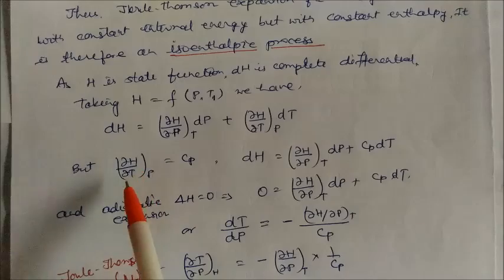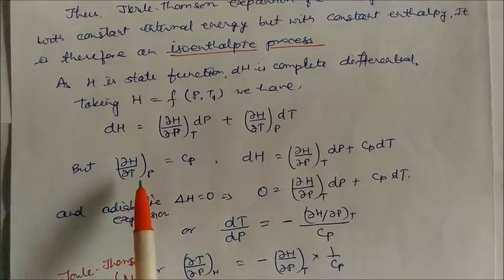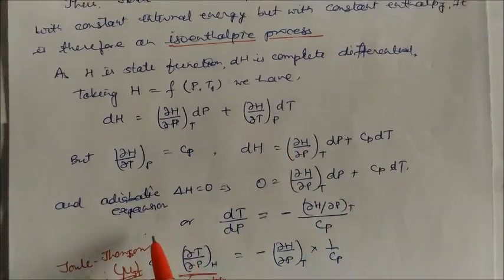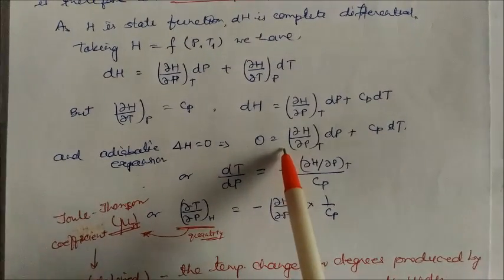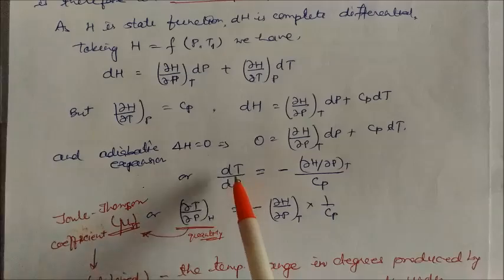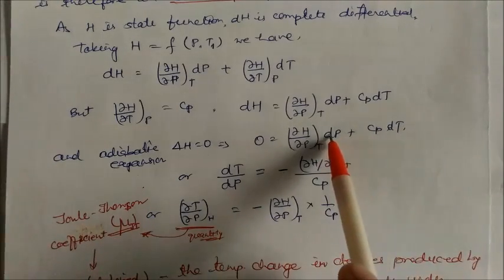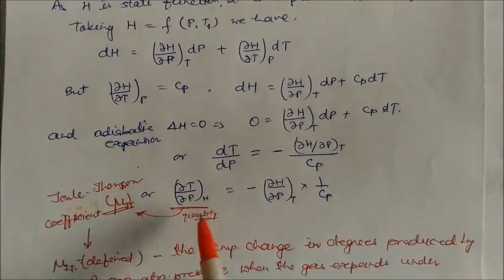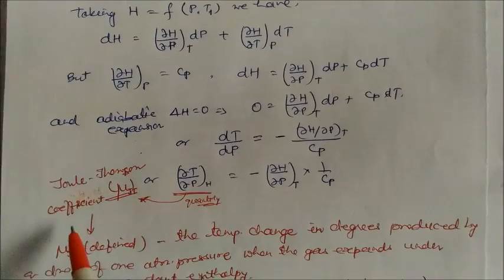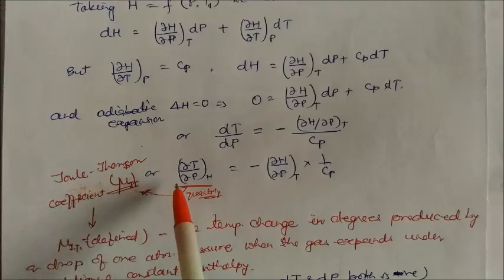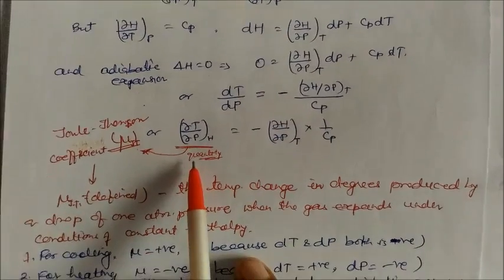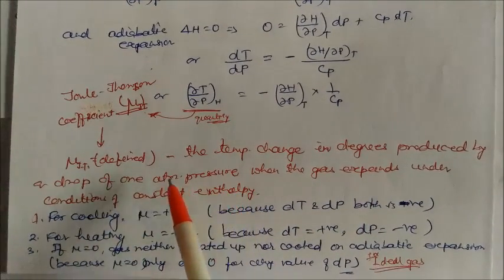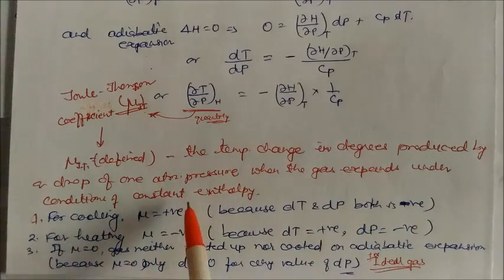We can write dH equal to (δH/δP) at constant temperature times dP plus (δH/δT) at constant pressure times dT. We know that (δH/δT) at constant pressure equals Cp. Substituting, we get (δH/δP) at constant temperature times dP plus Cp times dT equals zero, since dH equals zero. Rearranging, dT/dP equals minus (δH/δP) divided by Cp, which is the Joule-Thomson coefficient, denoted mu_JT. It is defined as the temperature change in degrees produced by a drop of one atmospheric pressure when the gas expands under conditions of constant enthalpy.